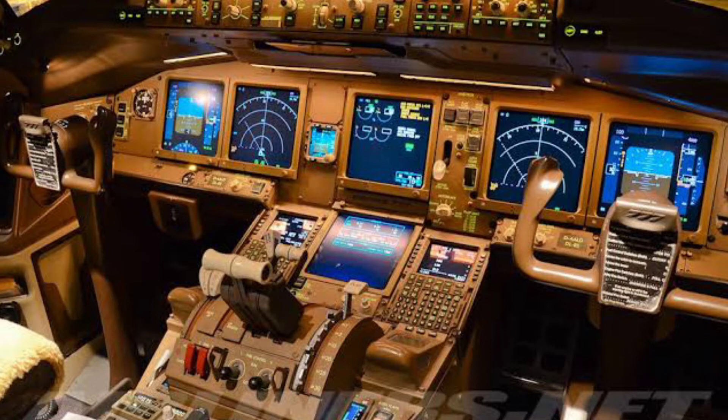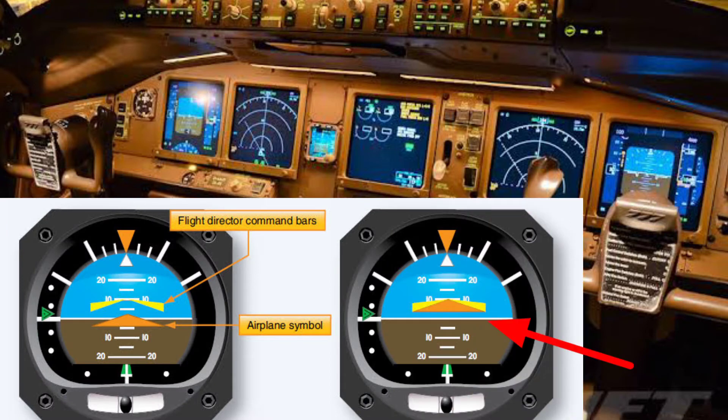Essentially, a flight director system is an autopilot system without the servo. Flight director information is displayed on the instrument that displays the aircraft's attitude. A symbol representing the aircraft is fit into a command bar positioned by the flight director in the proper location for a maneuver to be accomplished. The object is always to fly the aircraft symbol into the command bar symbol. The instrument that displays the flight director command is known as a flight director indicator.